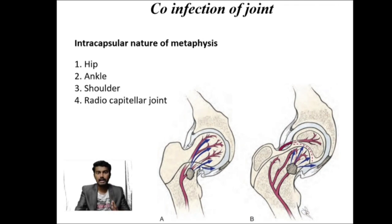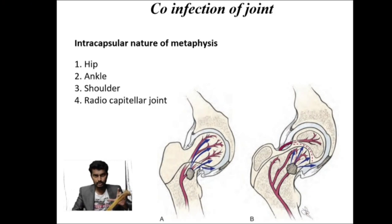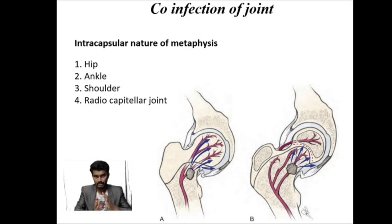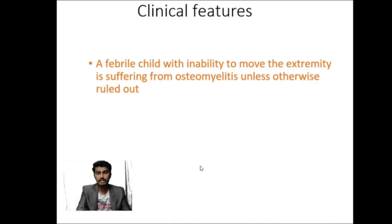Regarding joint involvement, when the metaphysis lies within a joint capsule, pus can evade into the epiphysis and joint space. There are four exceptions where the metaphysis is intracapsular: the hip joint, the proximal humerus (shoulder joint), the radiocapital joint, and the proximal fibula (ankle joint).